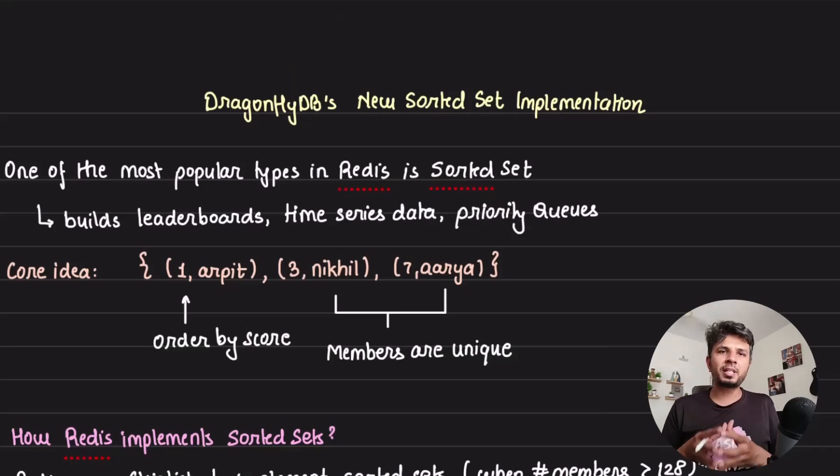DragonflyDB is a drop-in replacement for Redis that offers 25 times the throughput. Instead of using skip lists to implement sorted sets, they use B+ trees to get a 40% improvement in memory and 500% improvement in throughput.